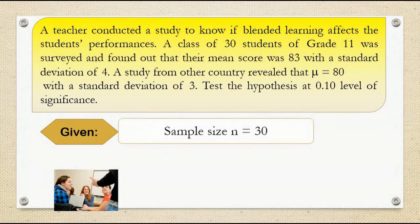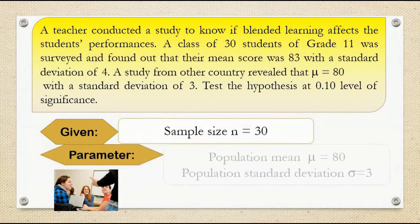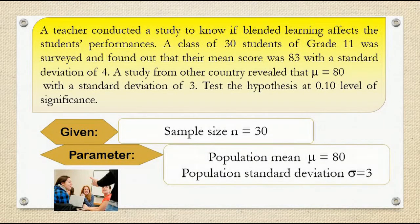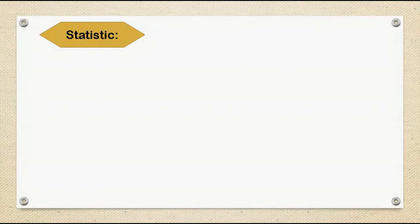Given: sample size n is equal to 30. Parameter: population mean mu is equal to 80. Population standard deviation sigma is equal to 3. Statistic: sample mean x-bar is equal to 83.